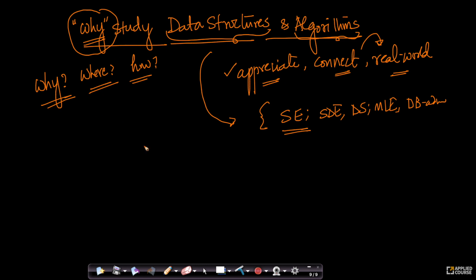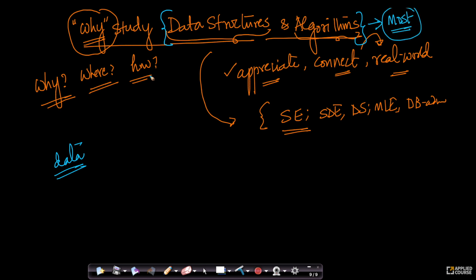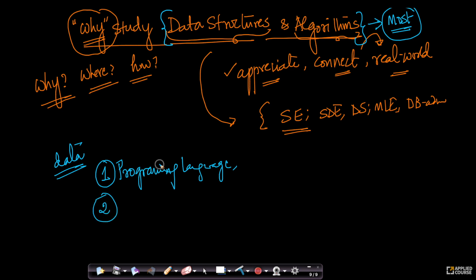So let me take you on a tangential tour and give you some data and arguments to convince you that data structures and algorithms is probably the most important subject — some of the most important topics in the whole of computer science. If I have to pick three things in computer science that are most important, I will pick: first, knowledge of a programming language — knowledge of programming in general — because without some knowledge of programming, you can't even work with a computer. The second most important thing I would rate as data structures and algorithms.